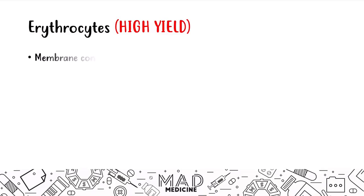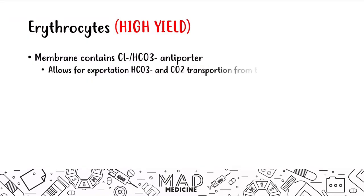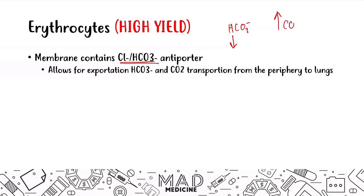The high-yield stuff you need to know for erythrocytes for Step 1 is that the membrane contains a chloride-bicarb antiporter, which allows for bicarb exportation and carbon dioxide transportation from the periphery to the lungs. This is very important: it's a chloride-bicarb antiporter, meaning in one direction you're going to export bicarb — HCO3 minus — and import carbon dioxide. This is what the antiporter allows the red blood cell to do at the lungs.